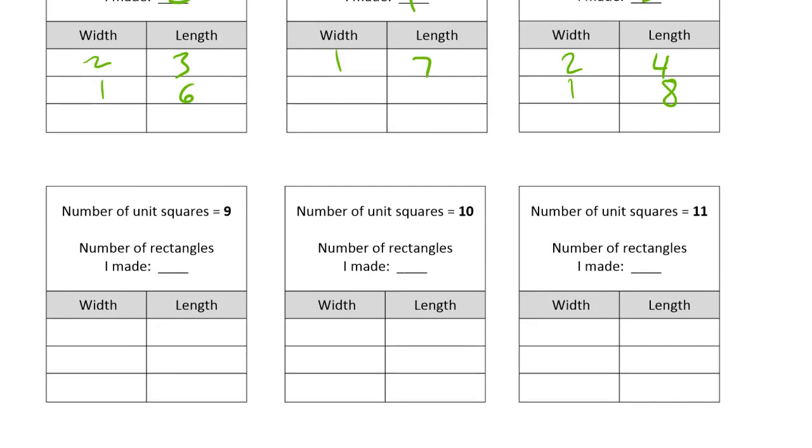And now for nine unit squares, you can make, of course, one by nine. And you can't do anything with two rows of two, but rows of three, three rows of three you can make with nine squares. And there's no other factor pairs for nine because four and five won't work. And there's nothing else you can do to make a rectangle with nine squares. So that's two.